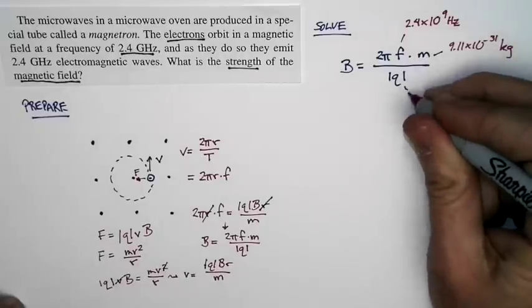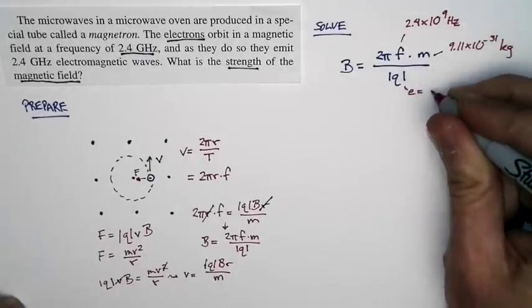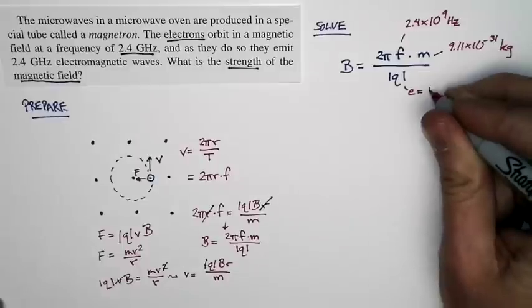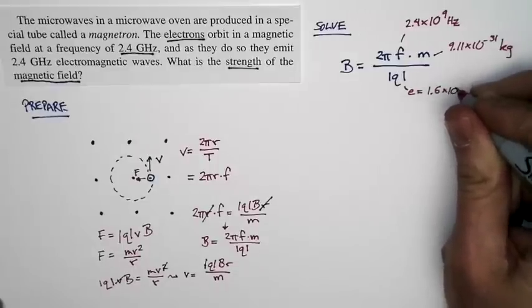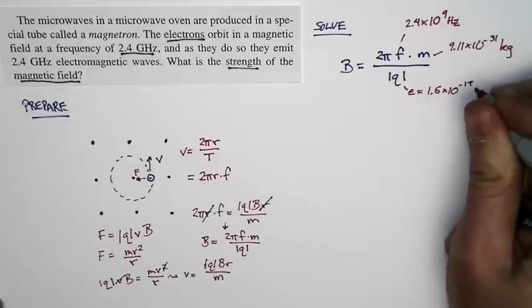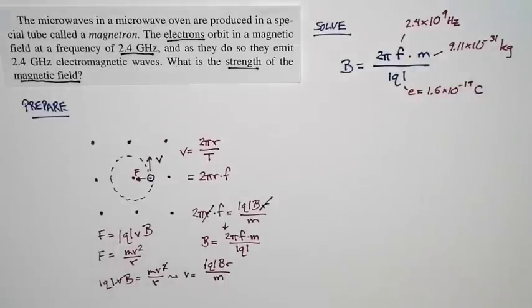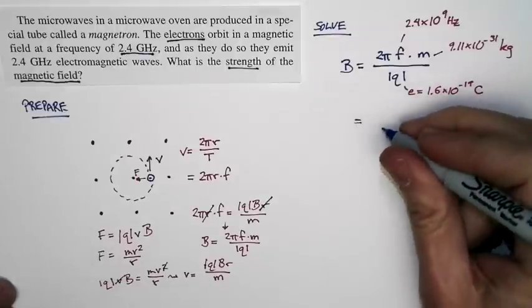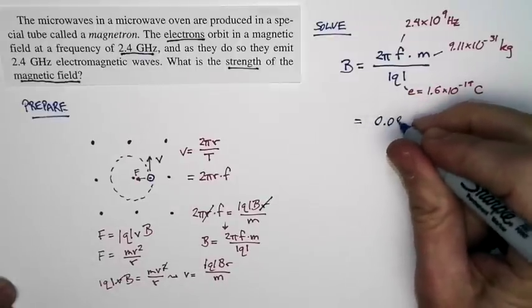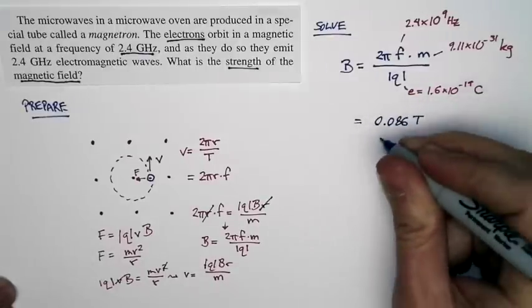The magnitude of the charge is just e, and e is 1.6 times 10 to the minus 19th coulombs. And so we have everything we need to calculate the magnitude of the magnetic field. And if we do that, we get a magnitude of the magnetic field that's 0.086 teslas.